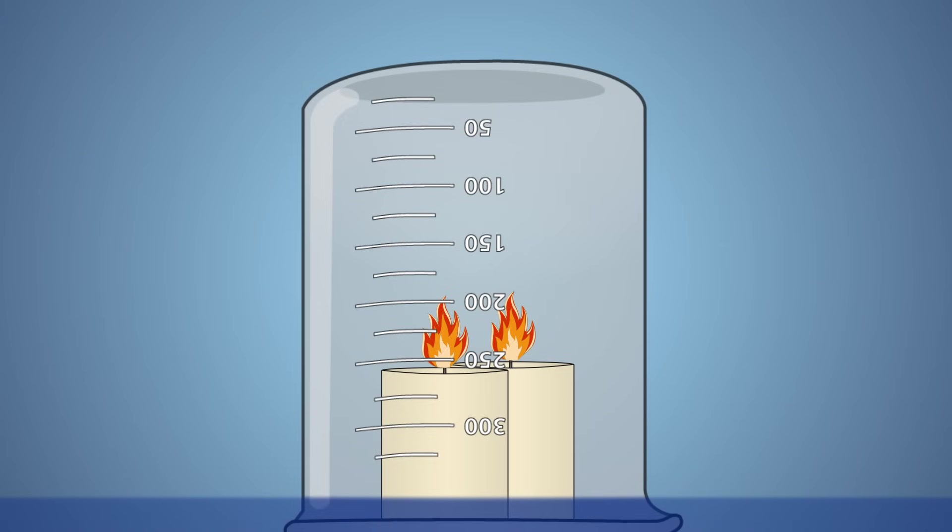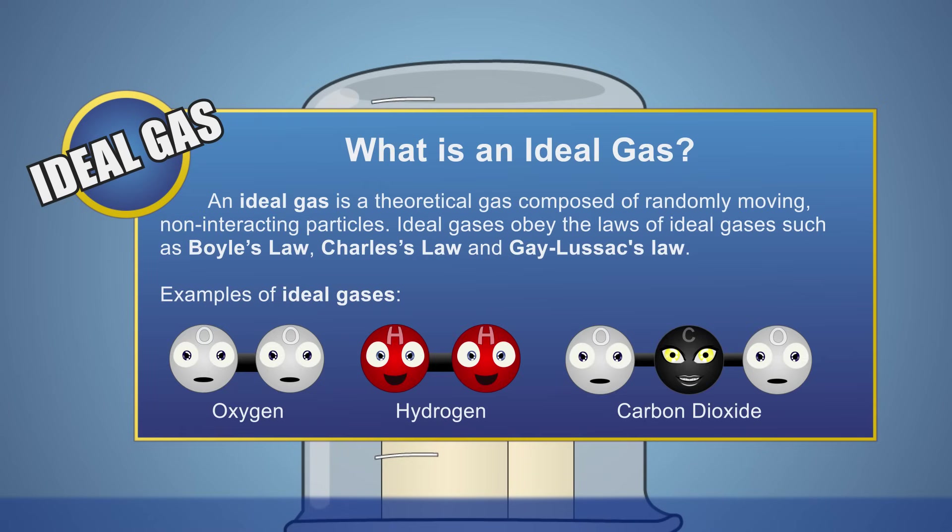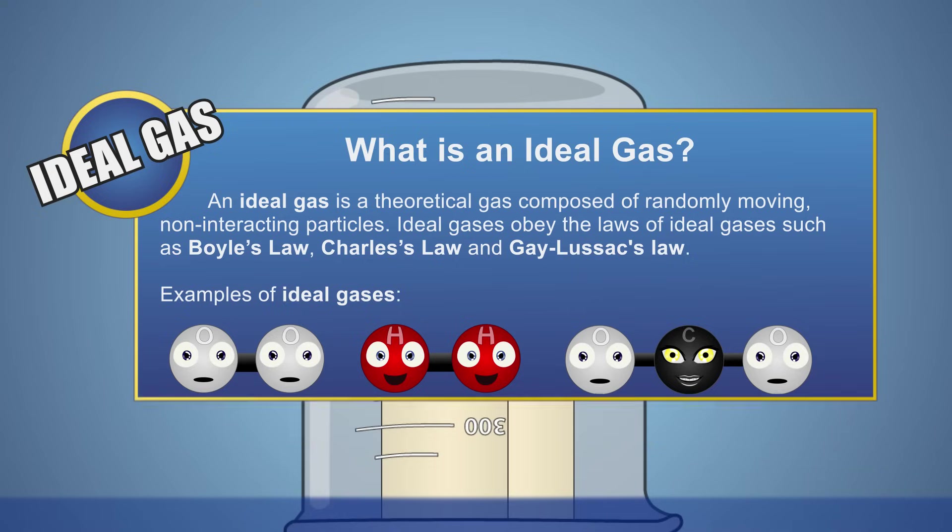As we mentioned in our last episode, an ideal gas is a theoretical gas composed of a set of randomly moving, non-interacting particles. Under normal conditions, many gases such as oxygen, hydrogen, and some heavier gases like carbon dioxide will behave like an ideal gas. This means they follow the laws of gases such as Gay-Lussac's Law.